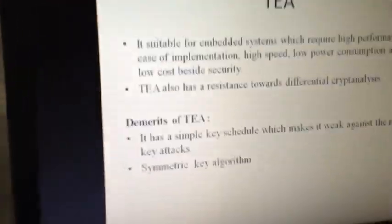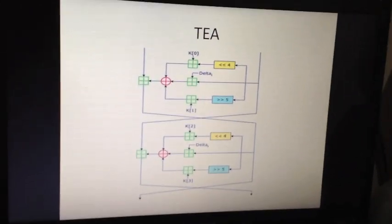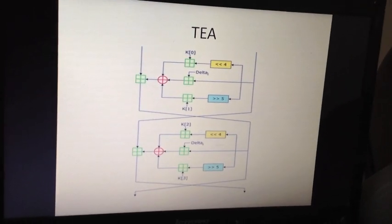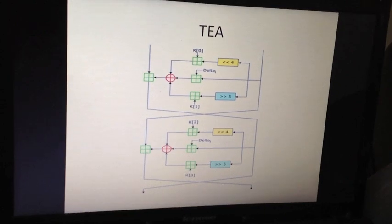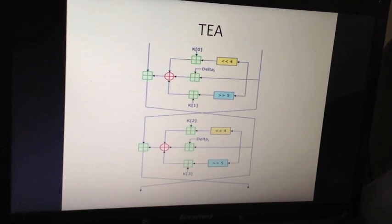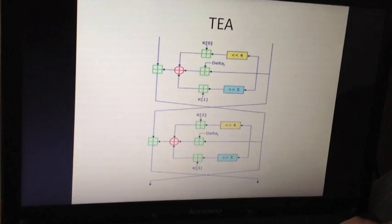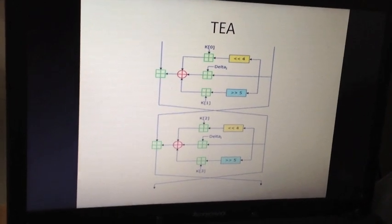Now TEA had demerits — there was a correlation between two or three keys, and that lessened its effective key strength to 126 bits from 128. This was a major drawback and was misused in Microsoft's Xbox 360 as well. That was overcome by MTA, which we'll look into in detail.